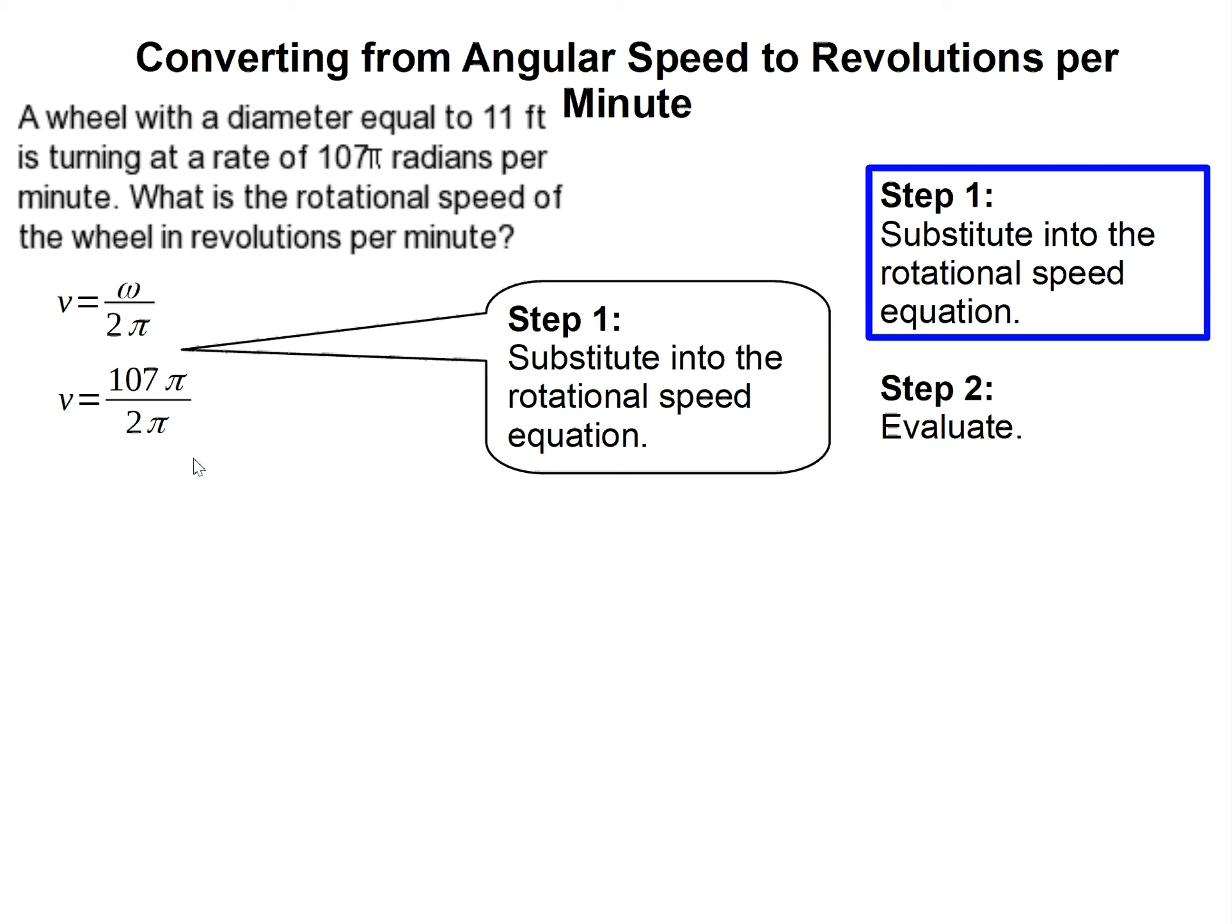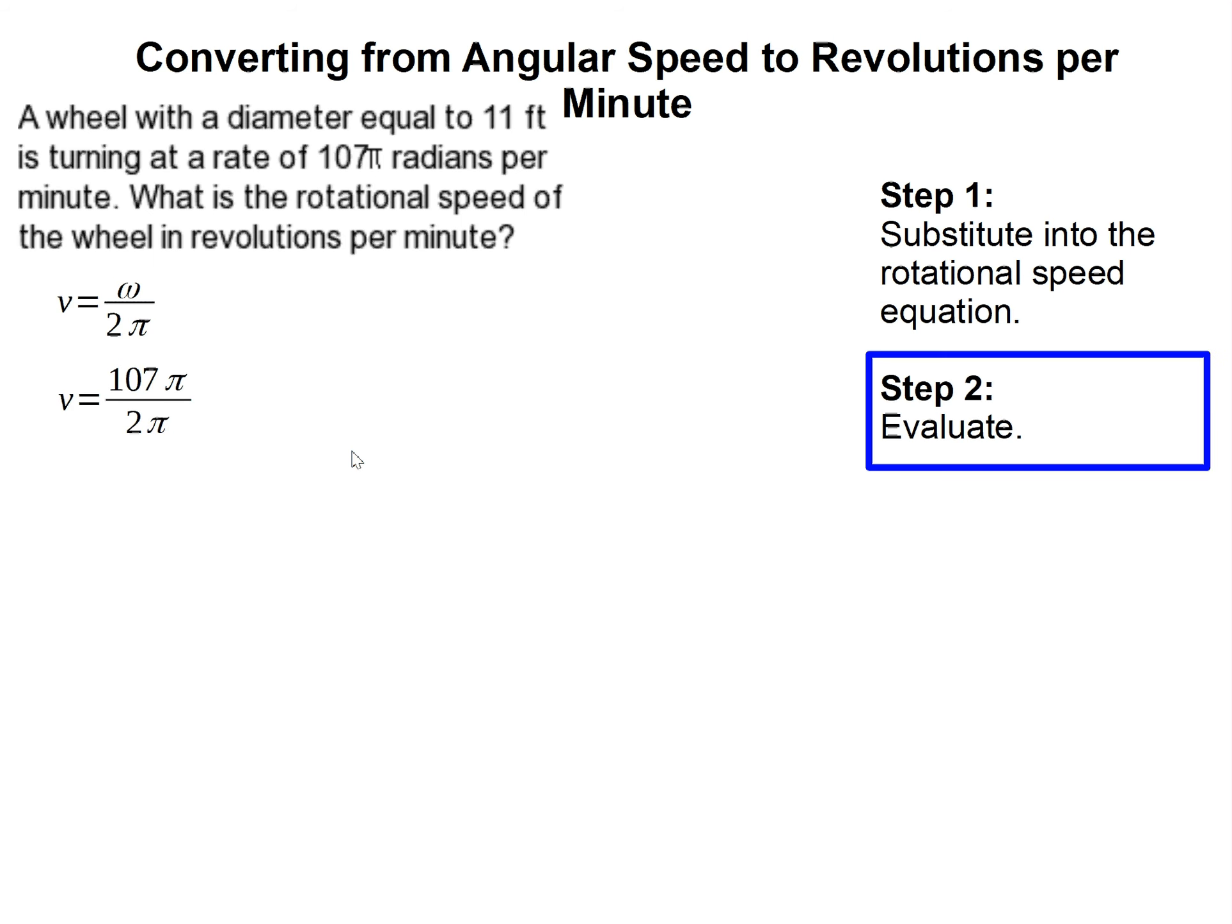Then we simply evaluate or simplify. The π's cancel each other out, and 107 divided by 2 is 53 and a half, and our units is revolutions per minute. And that completes our problem.